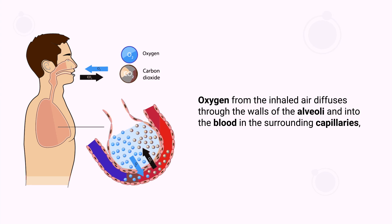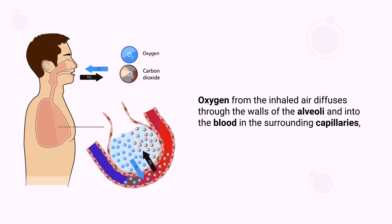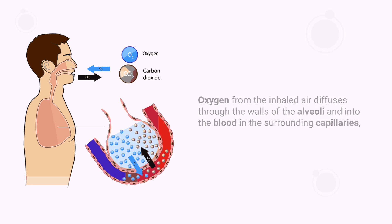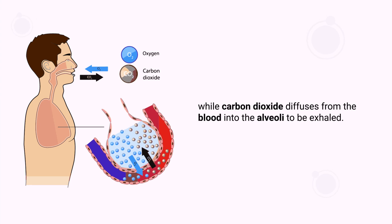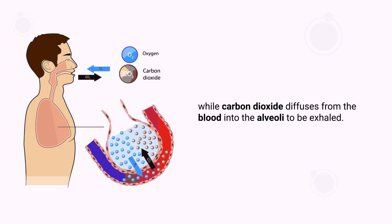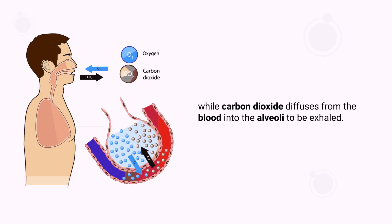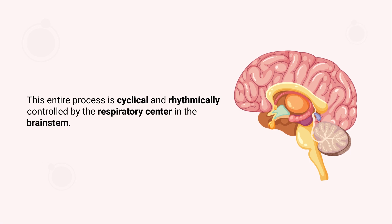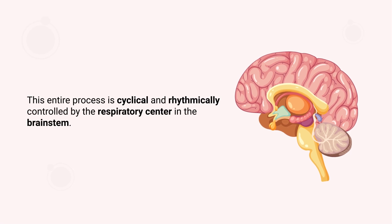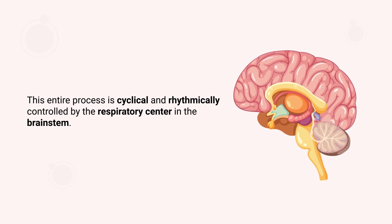The alveoli are tiny balloon-like structures where gas exchange occurs. Oxygen from the inhaled air diffuses through the walls of the alveoli and into the blood in the surrounding capillaries, while carbon dioxide diffuses from the blood into the alveoli to be exhaled. This entire process is cyclical and rhythmically controlled by the respiratory center in the brainstem.